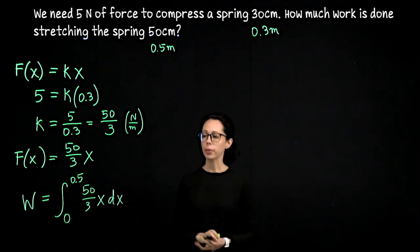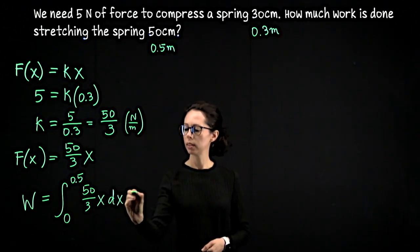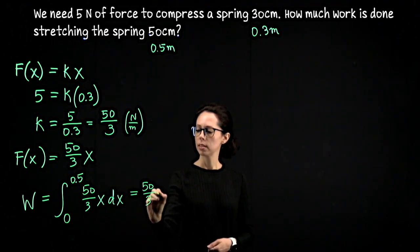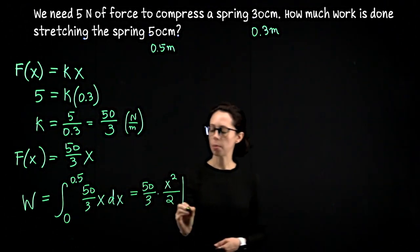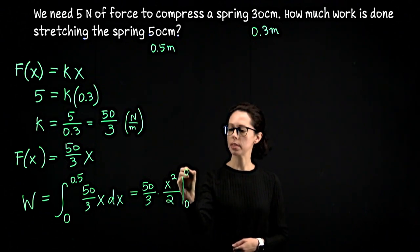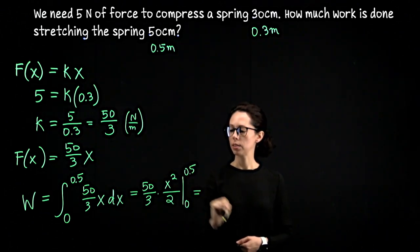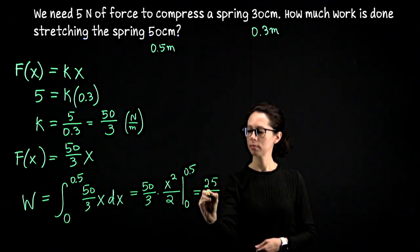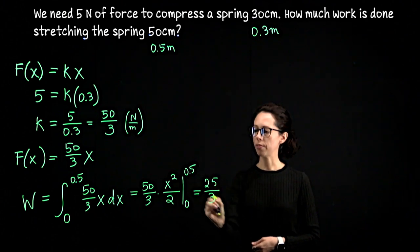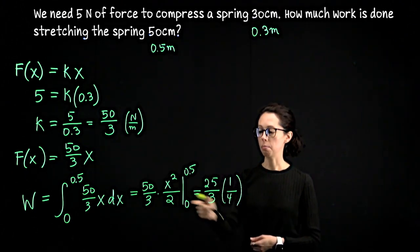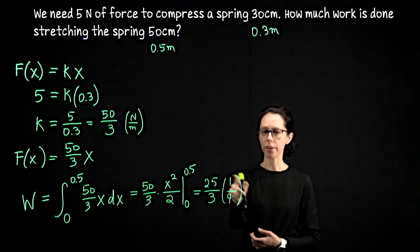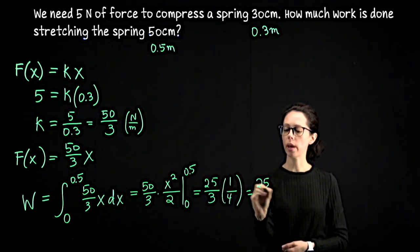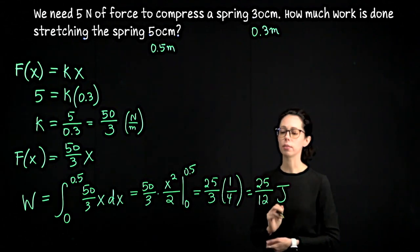That's the heart of the problem, setting this up. Let's evaluate it. We're going to do power rule here. This is going to be 50 thirds times x squared over 2. Plug in top and bottom bounds, bottom bound is 0, top is 0.5. So that's going to be 25 over 3, and 0.5 squared is a quarter minus 0. So we're left with 25 over 12 joules. That would be the unit for work.